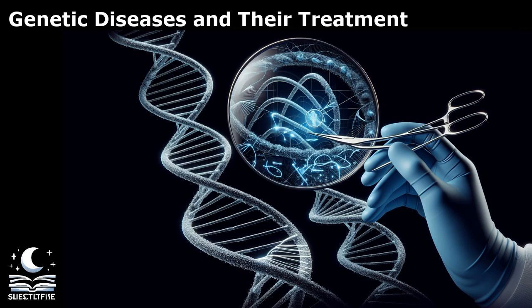Gene therapy is a revolutionary approach to treating genetic diseases by targeting the underlying cause at the genetic level. This technique involves introducing genetic material into a patient's cells to correct or replace faulty genes, with the potential to provide long-lasting or even permanent treatment. There are different types of gene therapy, including gene replacement therapy, gene editing, and gene silencing. Gene replacement therapy delivers a healthy copy of a gene to replace a mutated or missing one. Gene editing techniques such as CRISPR-Cas9 allow precise modifications to the DNA sequence, correcting genetic mutations. Gene silencing approaches aim to reduce the expression of harmful genes by interfering with their activity.